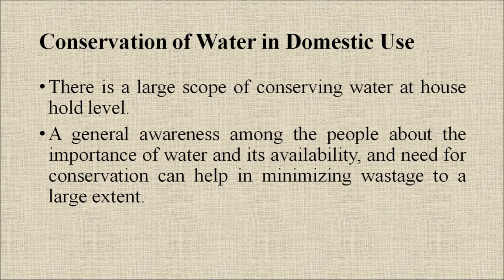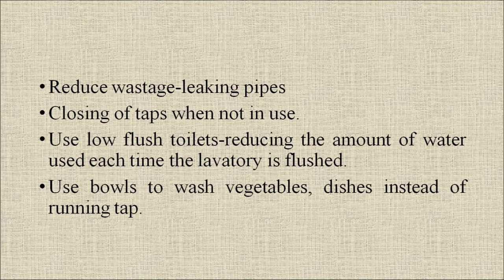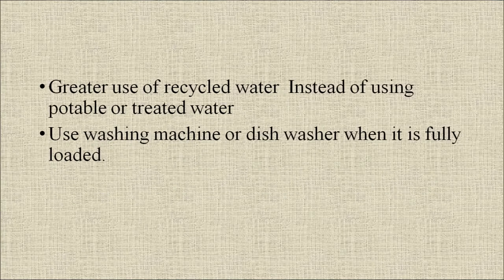Conservation of water in domestic use: there is a large scope for conserving water at the household level. General awareness about the importance of water and its availability can help minimize wastage to a large extent. Some ways to improve water use efficiency at household level include: reduced wastage or leaking of pipes, closing taps when not in use, use of low-flush toilets, reducing the amount of water used each time the lavatory is flushed, use of bowls to wash vegetables and dishes instead of running tap, greater use of recycled water instead of potable or treated water, and using the washing machine or dishwasher only when fully loaded.